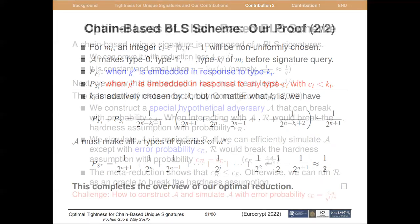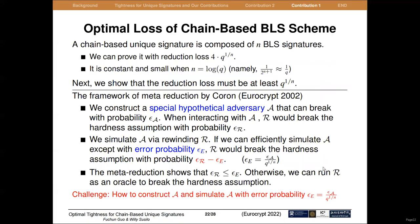With the above approach, we can prove that the chain-based BLS scheme achieves a reduction loss of 4 times q^(1/n), where q is the number of signature queries. This loss is constant and small when n is set to log q. Next, we show that this kind of reduction loss must be at least q^(1/n).